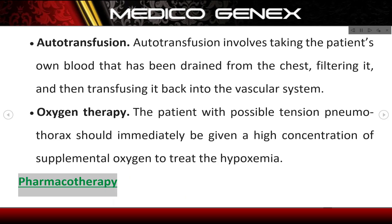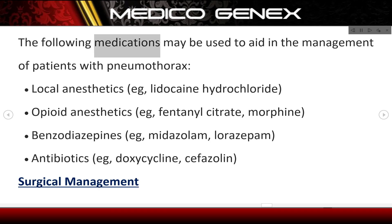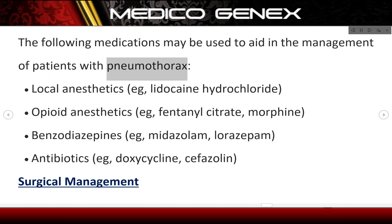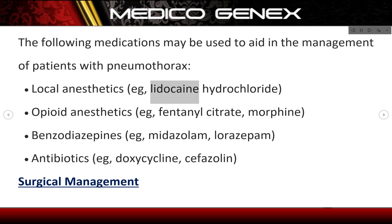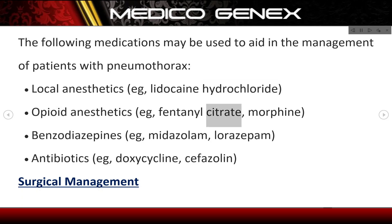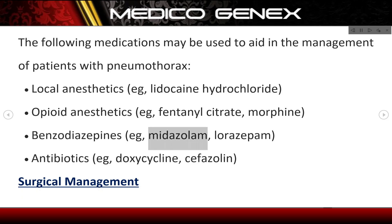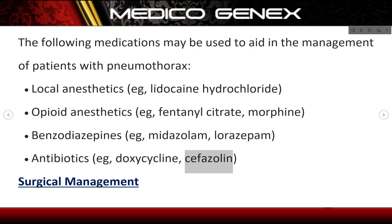Pharmacotherapy. The following medications may be used to aid in the management of patients with pneumothorax: local anesthetics (e.g., lidocaine hydrochloride); opioid analgesics (e.g., fentanyl citrate, morphine); benzodiazepines (e.g., midazolam, lorazepam); and antibiotics (e.g., doxycycline, cefazolin).